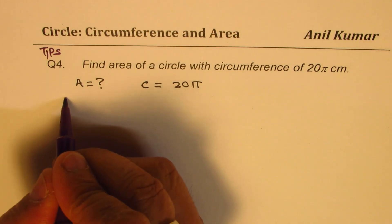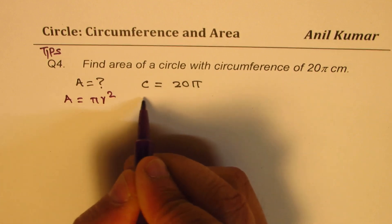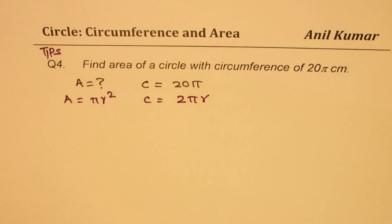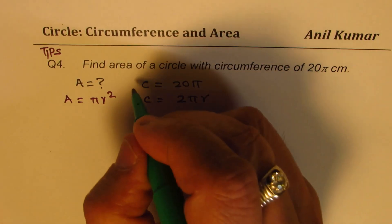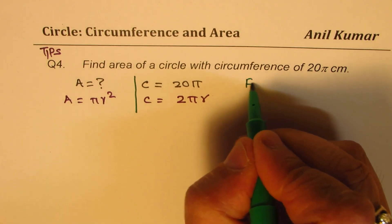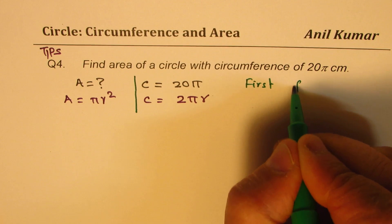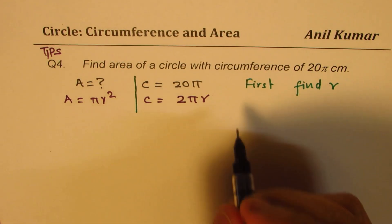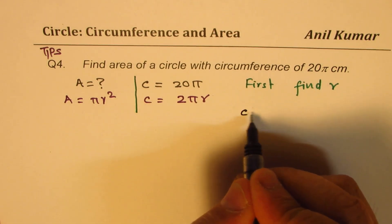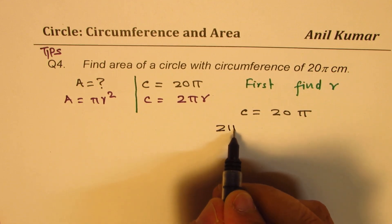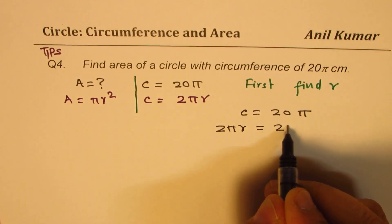Now, what is the formula for area? Area is πR squared, and circumference is 2πR. From the given condition, we can find R first. We know C equals 20π, and C is also 2πR. So, 2πR equals 20π.